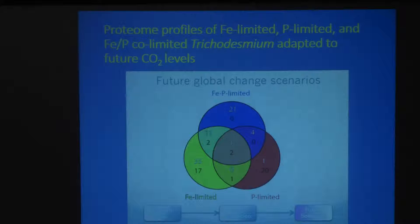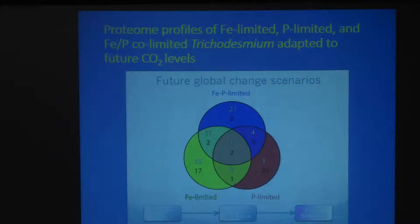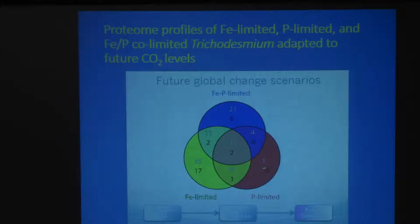You can see again you still have a lot of unique proteins that are upregulated in the co-limited ones. But now the iron limited ones are going crazy — 35 proteins upregulated, 17 downregulated. There's an interaction between iron and CO2 going on here that doesn't happen at low CO2. And even in phosphorus limitation, we have twice as many downregulated proteins at high CO2 as at low CO2.